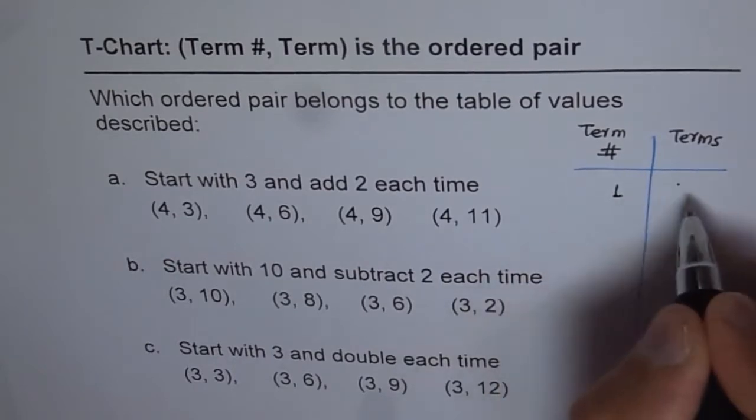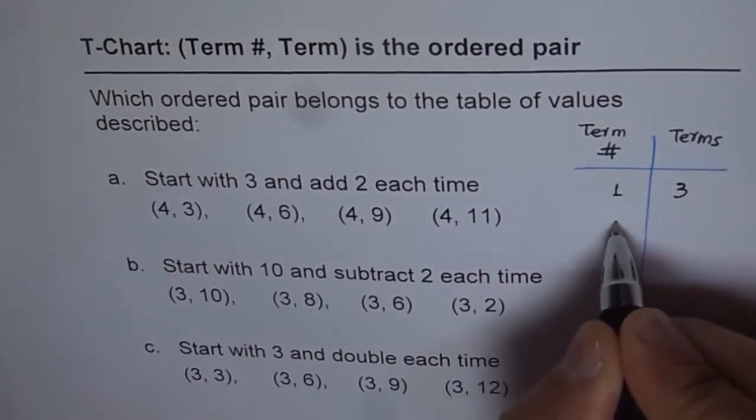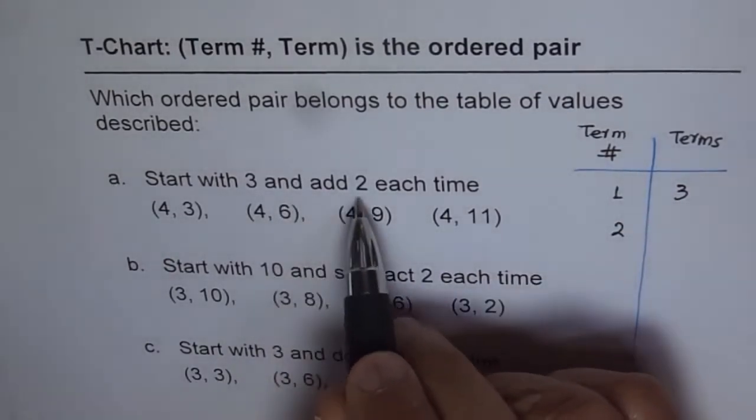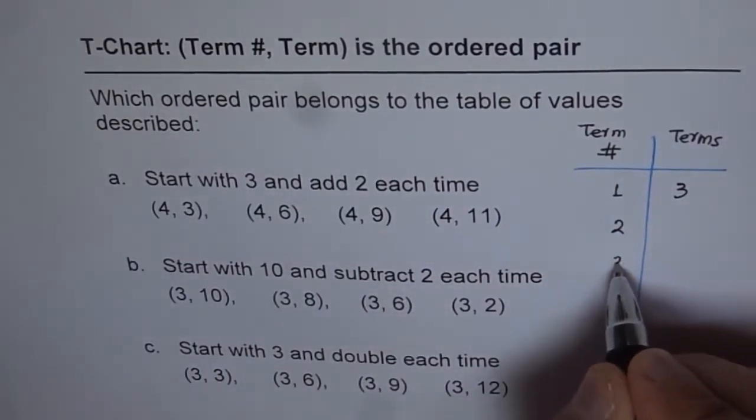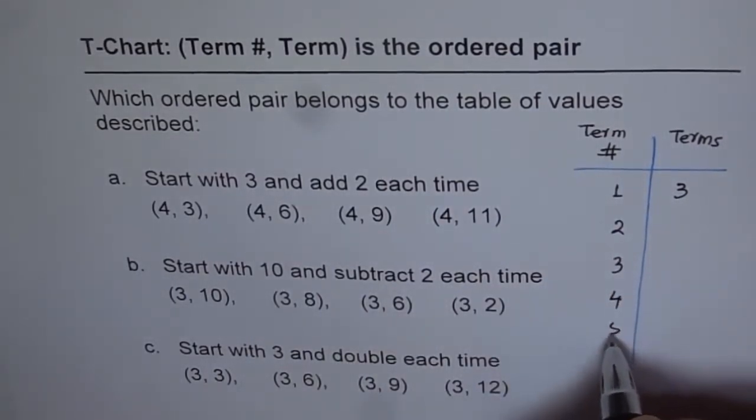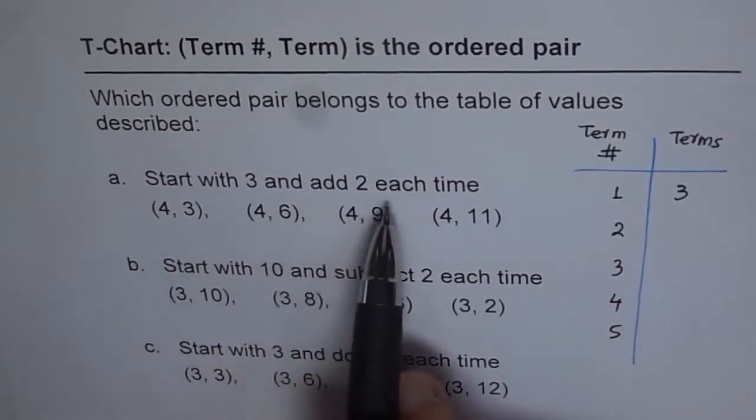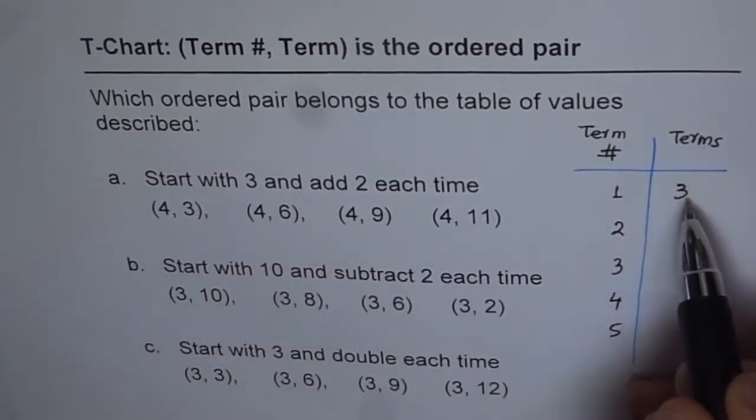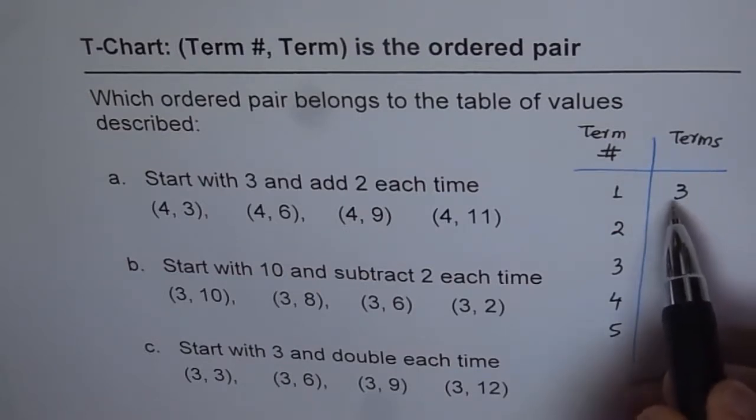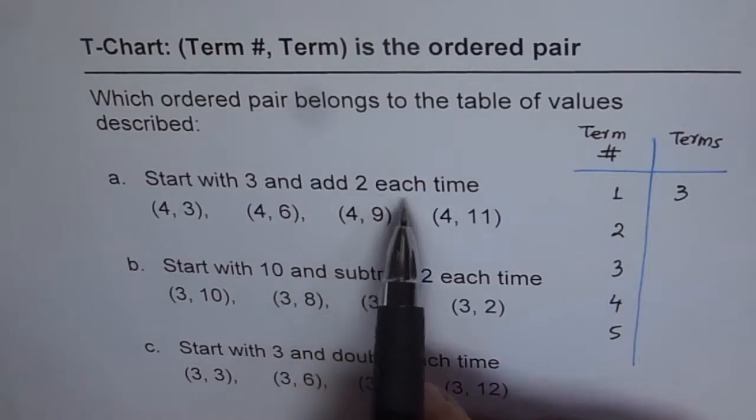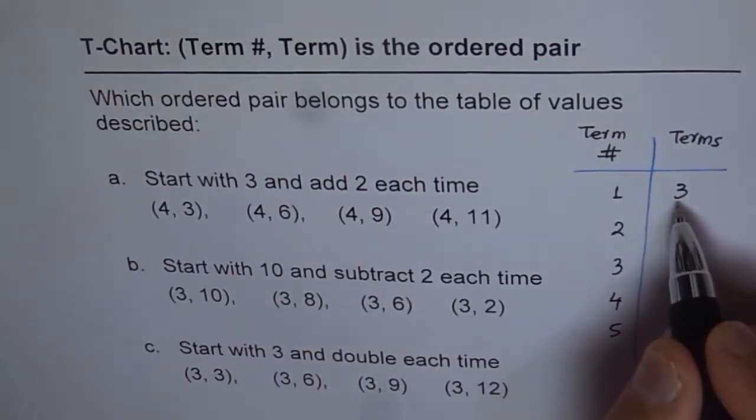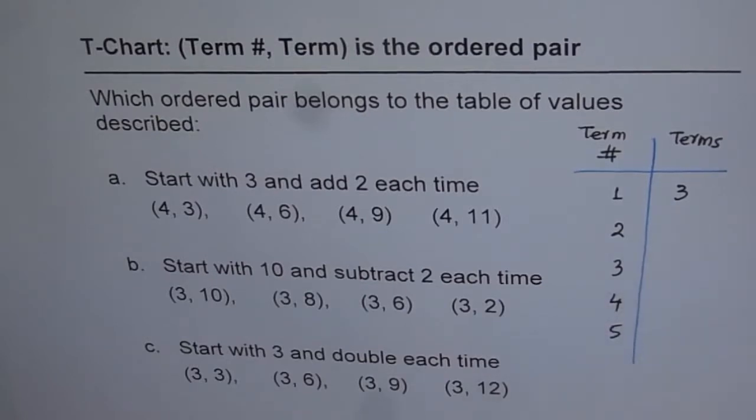So term number 1 is start with 3. Term number 2 will be add 2 each time. So term numbers are in sequence like 1, 2, 3, 4, 5 and so on. Now this is the rule by which terms will be written here. It says start with 3 and add 2 each time. So that means the first term is going to be 3, and then the next term will be plus 2.